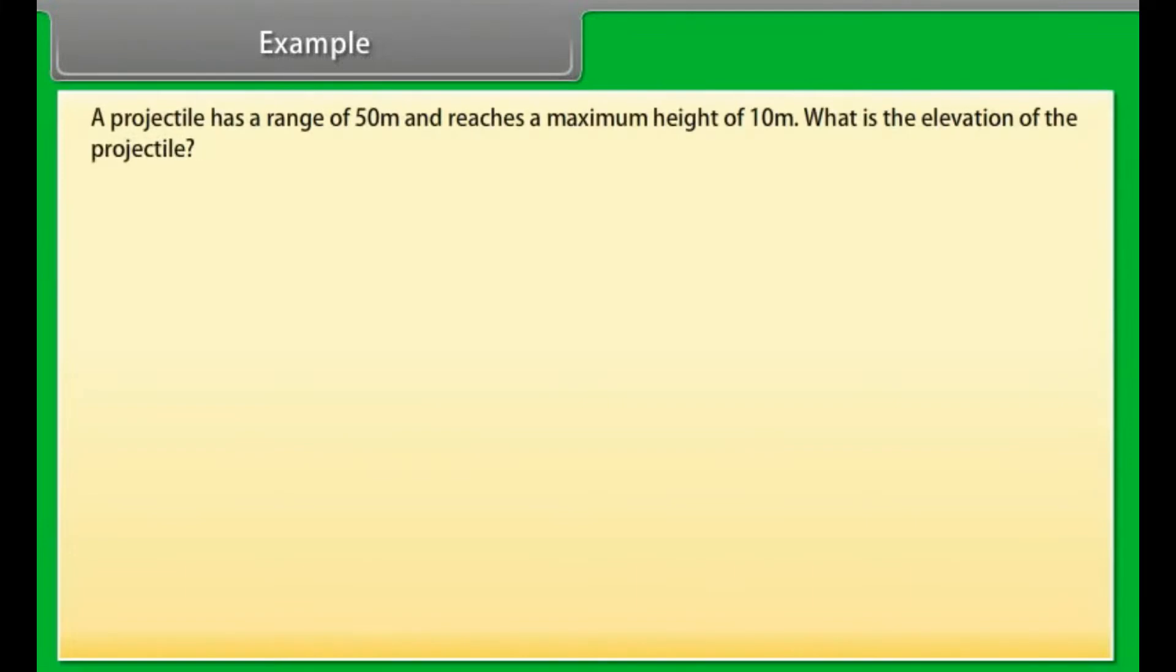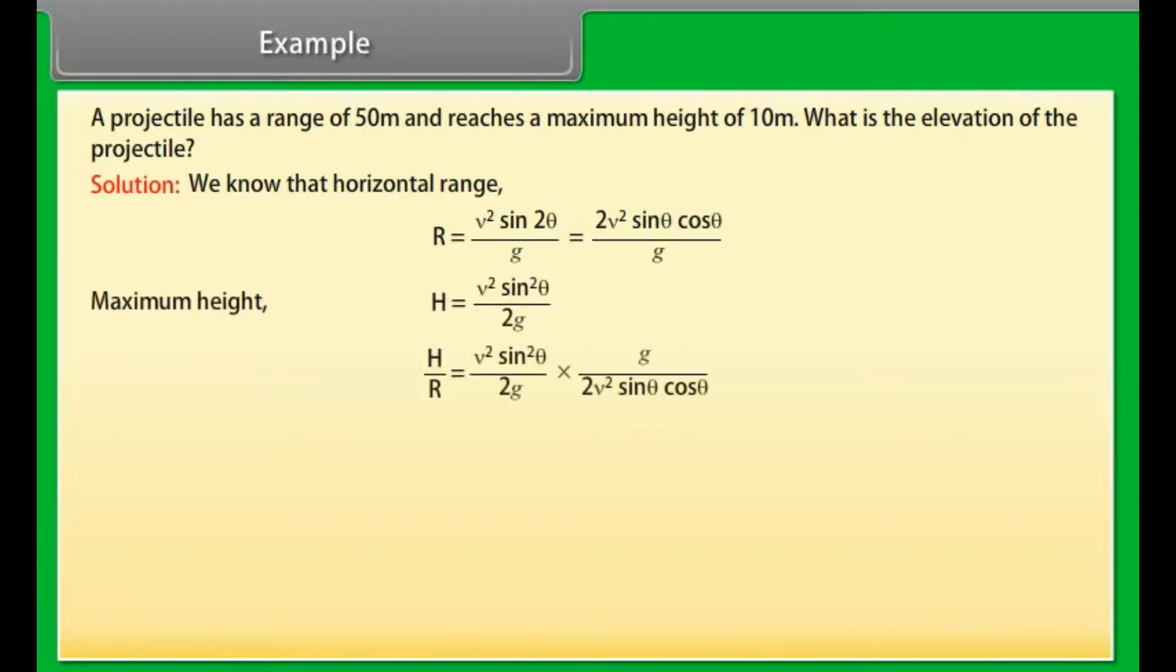Example. Let's take an example of projectile motion. A projectile has a range of 50 meters and reaches a maximum height of 10 meters. What is the elevation of the projectile? Let's see the solution. We know that horizontal range = v²sin2θ/g. We derive the relation between height and range is given by H/R = (1/4)tanθ. On calculating this equation, we get the value of θ = 38.66°.